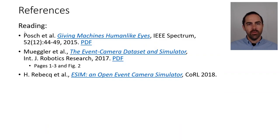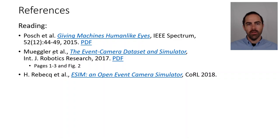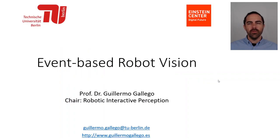Some references: the paper that mostly emphasizes this sampling principle of event cameras is 'Giving Machines Human-Like Eyes.' If you want to know more about how to simulate this, there is the paper by Mugler et al., 'The Event Camera Dataset and Simulator.' A more refined version of the simulator is in the paper eSim from 2018. Thank you very much.